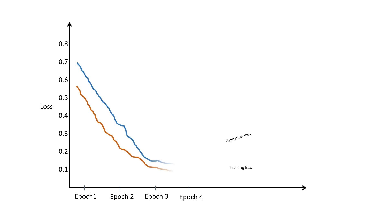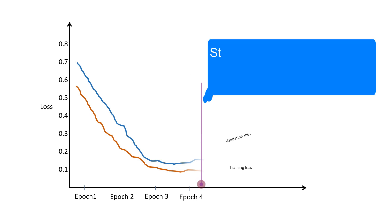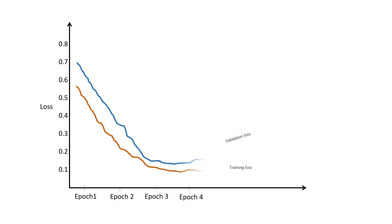We monitor certain criteria of the model, commonly validation loss, and stop at a point where we feel that the validation loss or the criteria is going to deteriorate further and not improve. We stop the training at that point and use the model for our testing purpose.